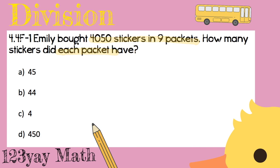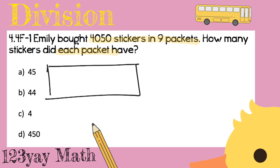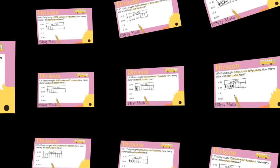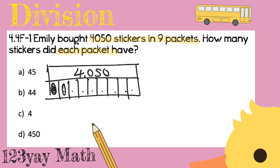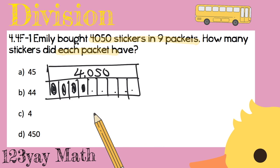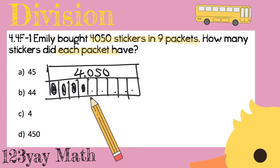What do we have? We have a bunch of stickers. Let's do a part-part-whole. We have the total — 4,050 stickers — and it's divided into nine packets. We're going to have some stickers in each packet. Is the number going to be bigger or smaller? There you go — it's going to be smaller, because we have to divide the total stickers into nine different packets.